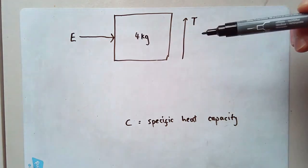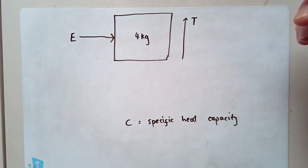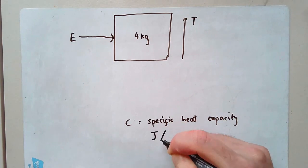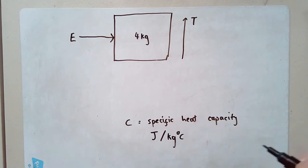The units are weird. The units are joules per kilogram degrees C. What does that mean? It means the number of joules required to heat up one kilogram by one degree.